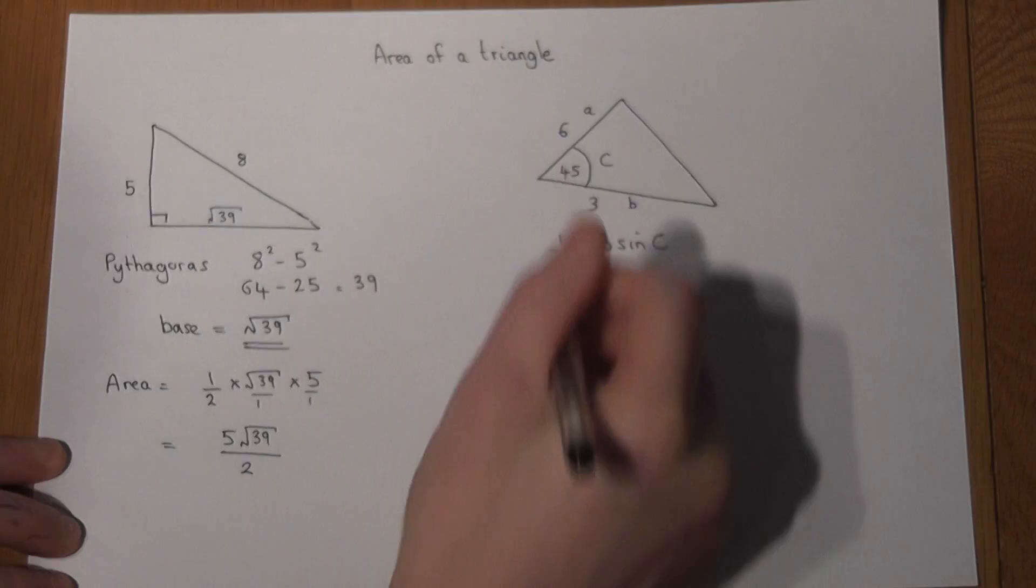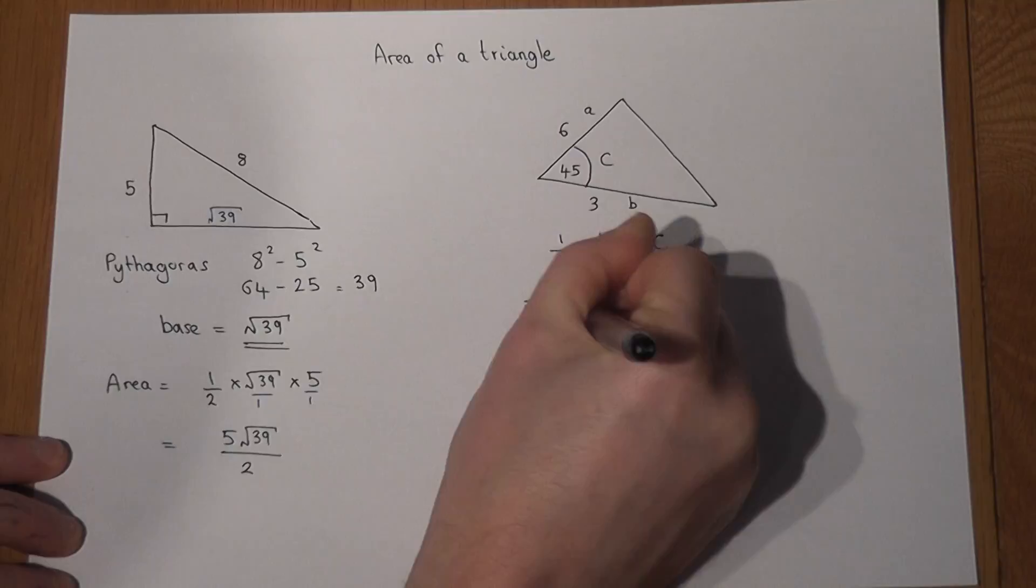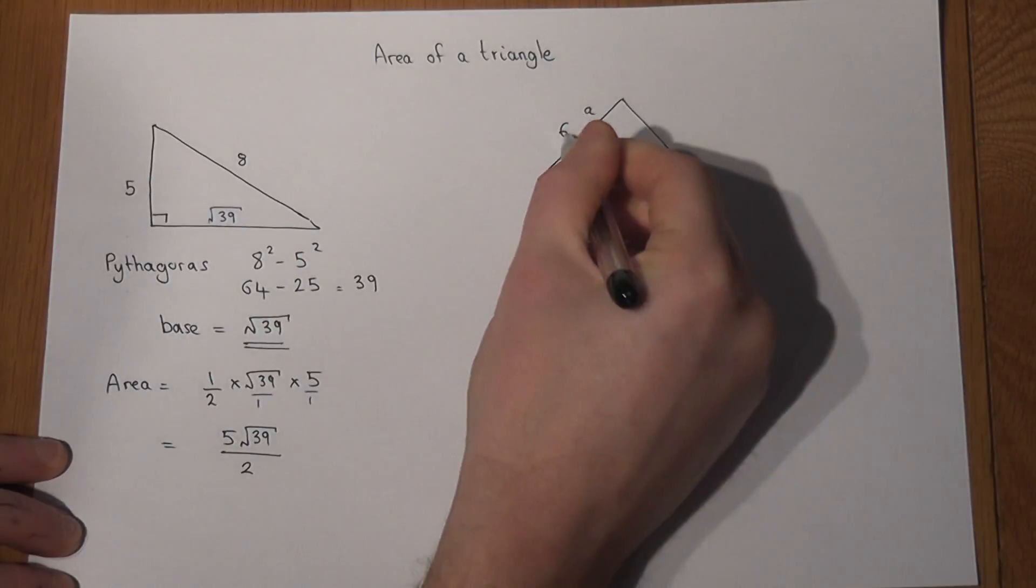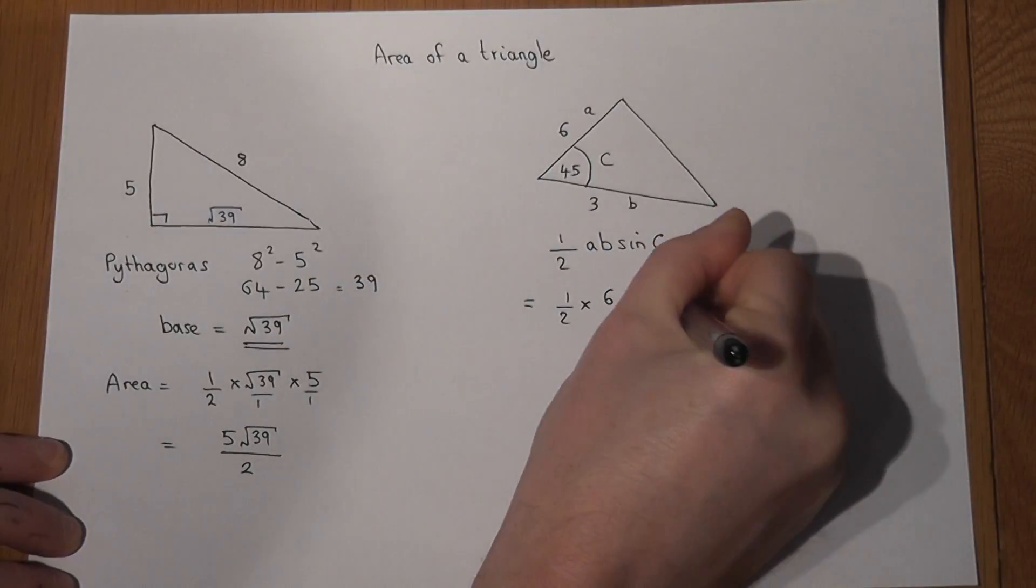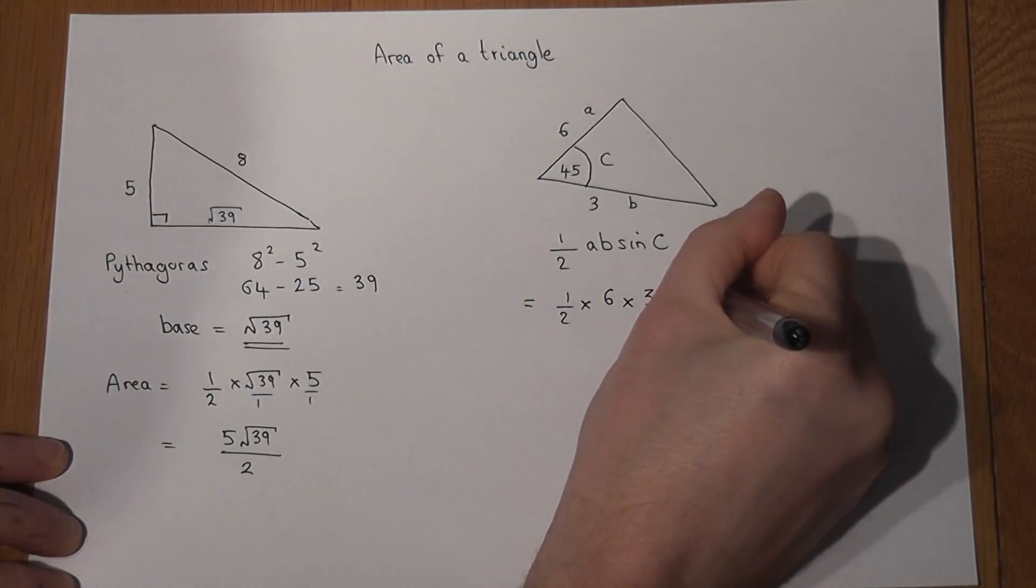And to apply the formula, we've got a half times A, which is 6, times B, which is 3, times sine 45.